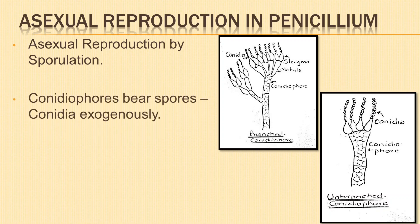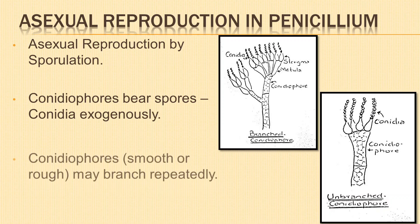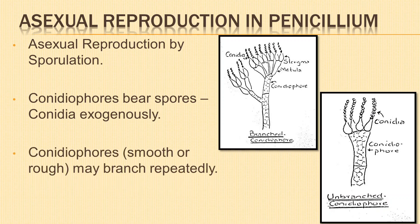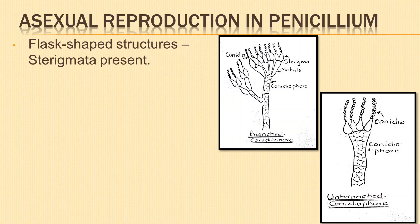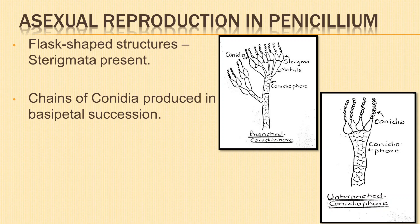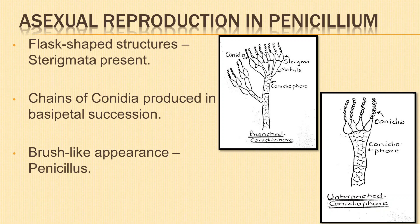Asexual reproduction is by sporulation. At the tip of long erect septate hyphae called the conidiophores, non-motile asexual spores called conidia are formed exogenously. The conidiophores are hyaline, smooth, or rough-walled. They branch several times to form primary, secondary, and tertiary branches. The branches which bear flower-shaped structures, sterigmata, or the phialides, are known as metulae. Chains of single-celled conidia are produced in basipetal succession with the youngest one at the base. The apical portion of the conidiophore with metulae, sterigmata, and chains of conidia give a brush-like appearance and is known as penicillus.